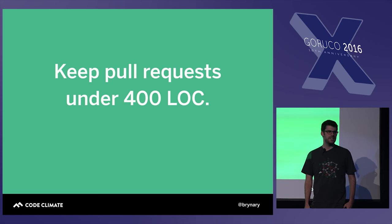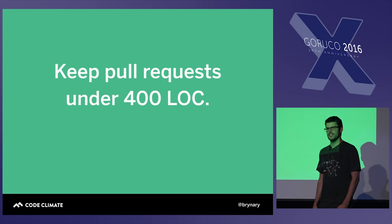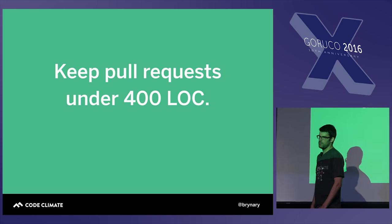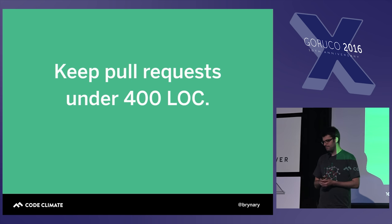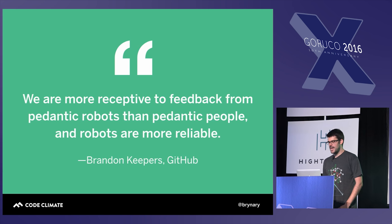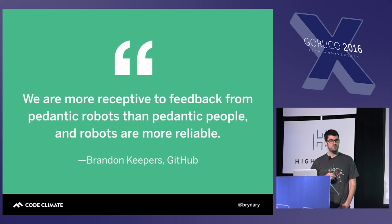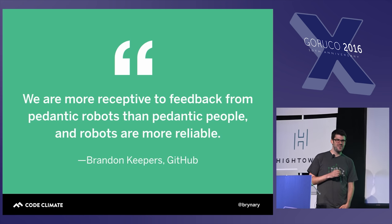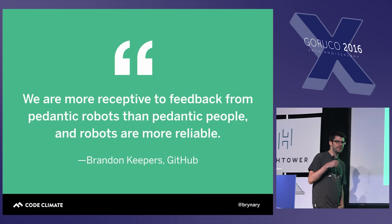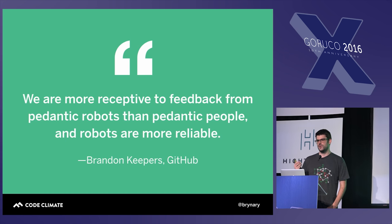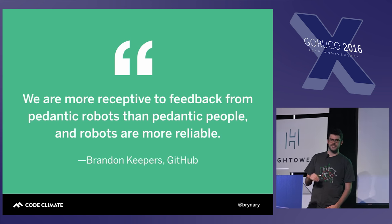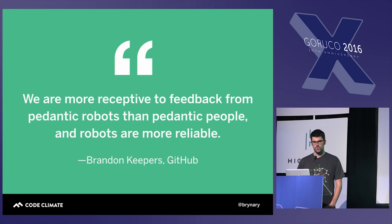So you might consider that any time you see a pull request over 400 lines of code, you post a comment asking whether it could be broken down into a series of smaller changes. There's an interesting quote from Brandon Keepers at GitHub: 'We are more receptive to feedback from pedantic robots than pedantic people, and robots are more reliable.' If you're using a static analysis tool or a linter, it doesn't get fatigued by the size of your change — it does the same thing on every file, supplementing and hedging against the human's ability to identify defects in larger changes.